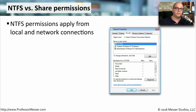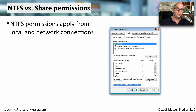There are two types of permissions that can apply in the Windows operating system: NTFS permissions and share permissions. These work together to provide overall rights and permissions for whoever's using the computer. NTFS permissions come directly from the file system of the computer, so whether you are accessing a file locally on that computer or from somewhere over the network, these NTFS permissions will always apply.